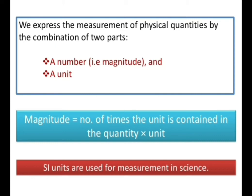So we say that measurement has two parts: a number, that is the magnitude, and a unit. The formula shown is: magnitude equals the number of times the unit is contained in the quantity, multiplied by the unit.